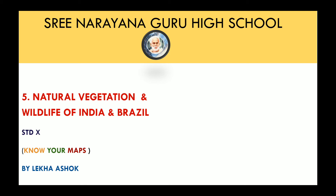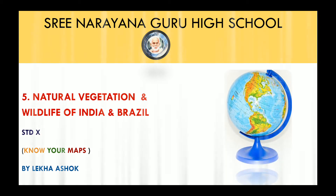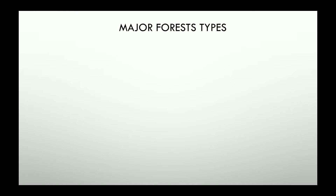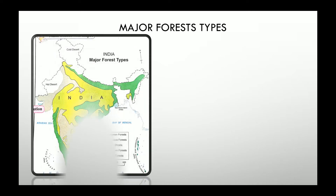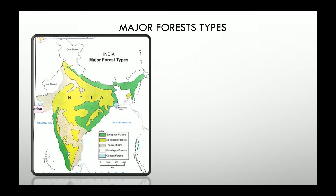Welcome back to the last part of chapter 5. Here we will discuss all the map related queries. Let's first observe the map and then find the answers for the following questions. Before we begin, let's have a glance at the map. We can see five types of forest in the map along with the index.